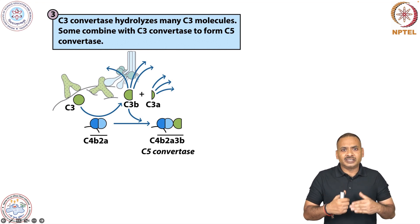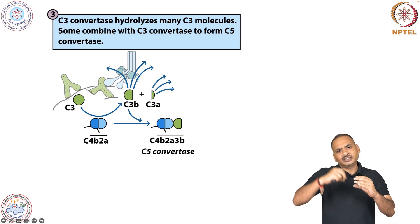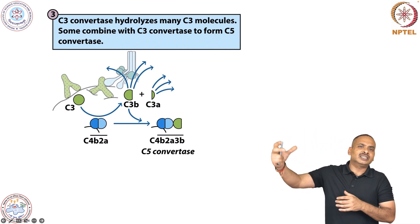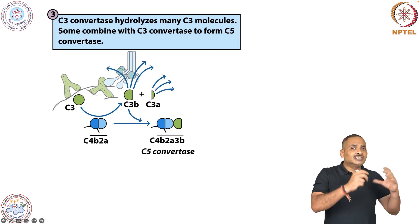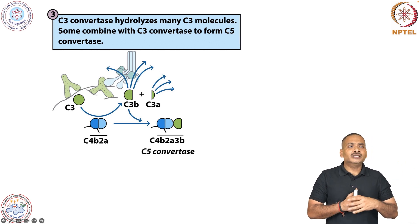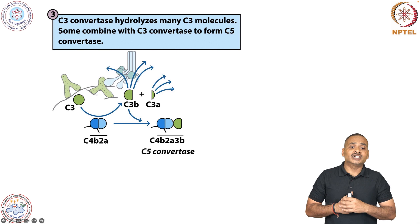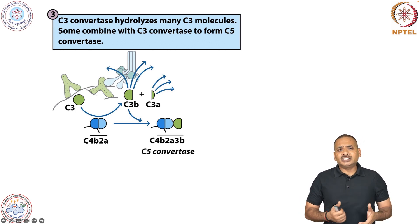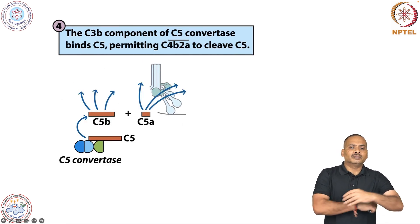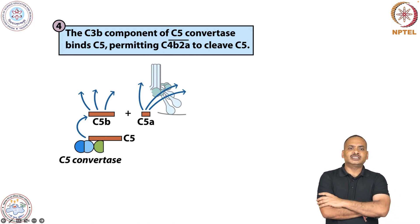The C3 convertase makes a lot of C3b. One function of C3b is coating the microbe for phagocytosis; another is generating the C5 convertase. The C5 convertase is C4b2a3b — when C3 convertase (C4b2a) interacts with C3b, it gains C5 convertase activity. This C5 convertase generates C5a and C5b. The C3b component of the C5 convertase binds with C5, permitting C4b2a to cleave C5 into C5a and C5b.